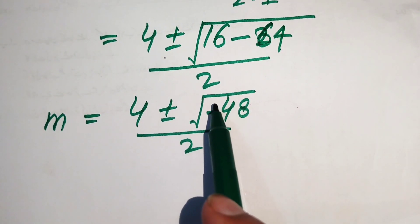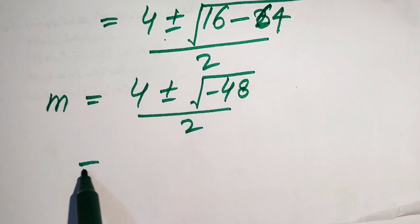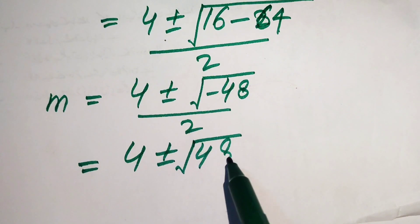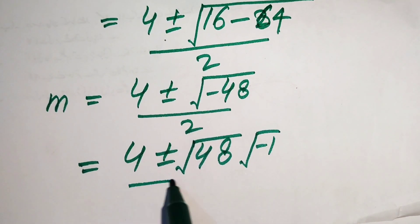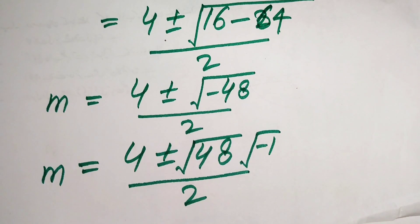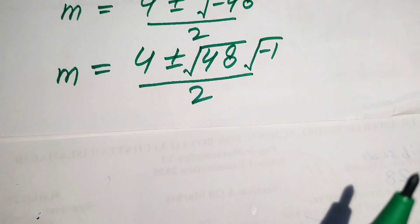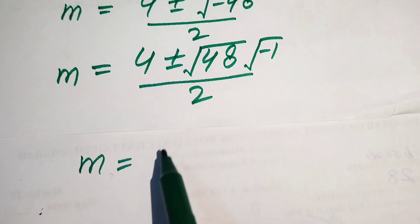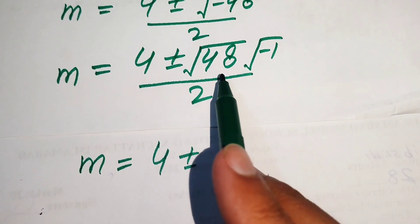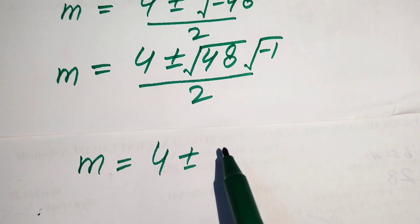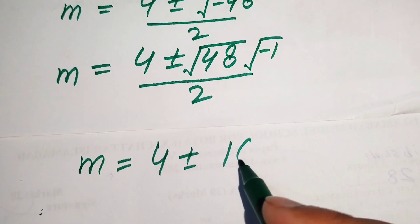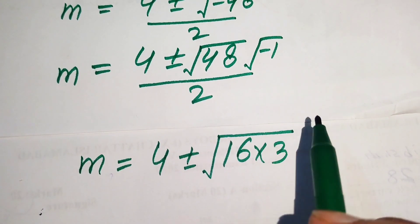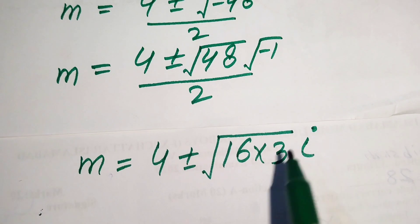We apply the radical sign to each factor separately, writing it as 4 plus or minus square root of 48 times square root of minus 1, divided by 2. We rewrite 48 as 16 times 3. We know that the square root of minus 1 equals iota.